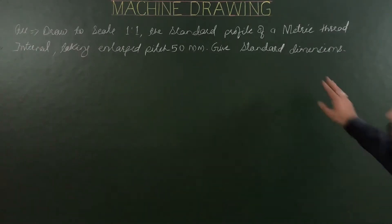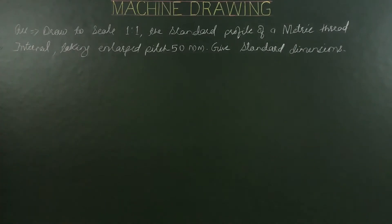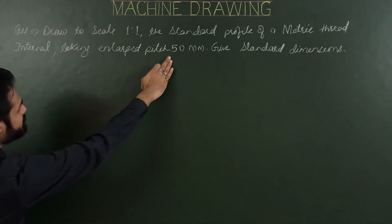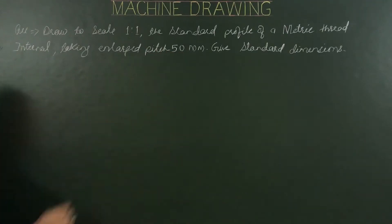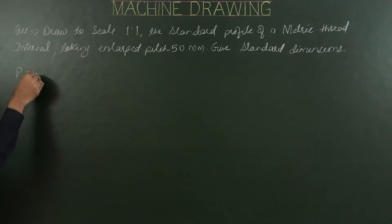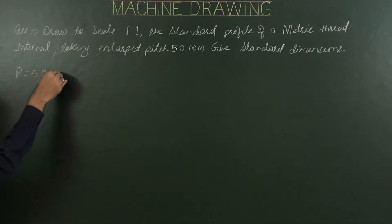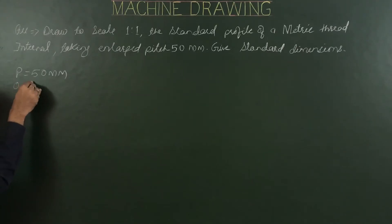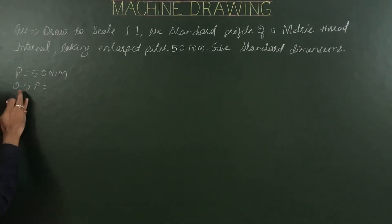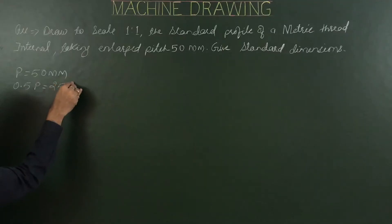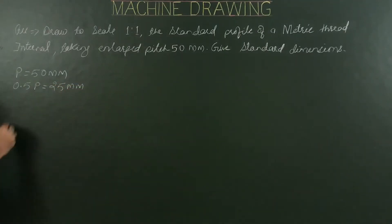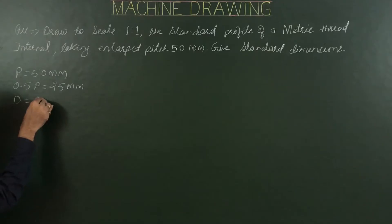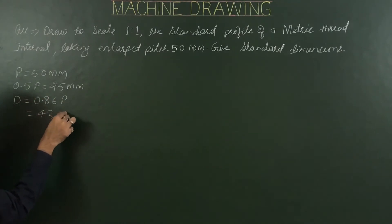For metric thread internal — internal means it's a part of a nut. First of all, we are required to calculate all standard dimensions based on the pitch. For a given pitch of 50mm, this is P. Half of P, half of pitch, is 25mm. Then major diameter, capital D, is 0.86 of P, that is 43mm.